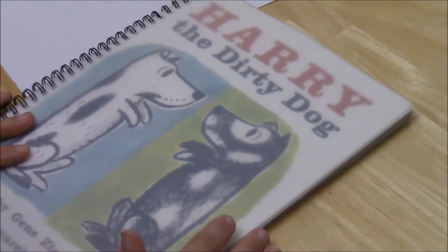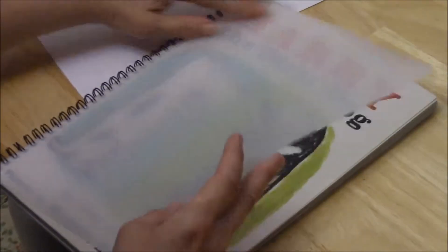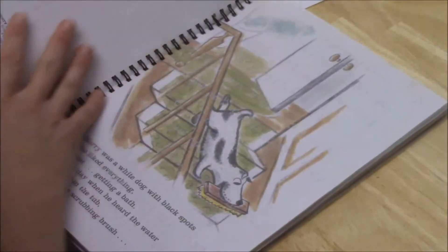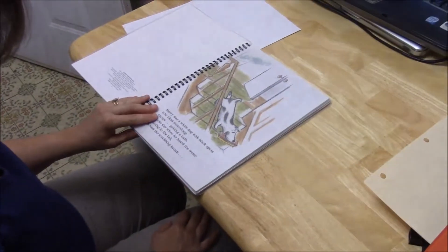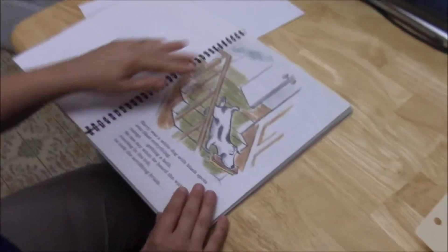This is a Braille print book called Harry the Dirty Dog, a book that I read to Marissa. This is my book from when I was a child. My parents subscribed to National Braille Press's Book of the Month Club, and that's where this came from.